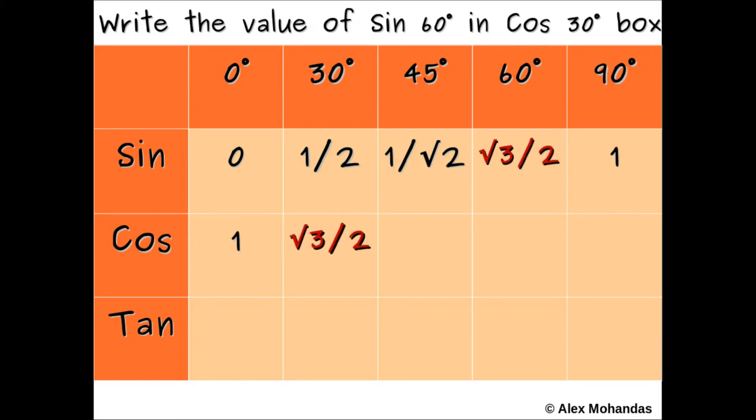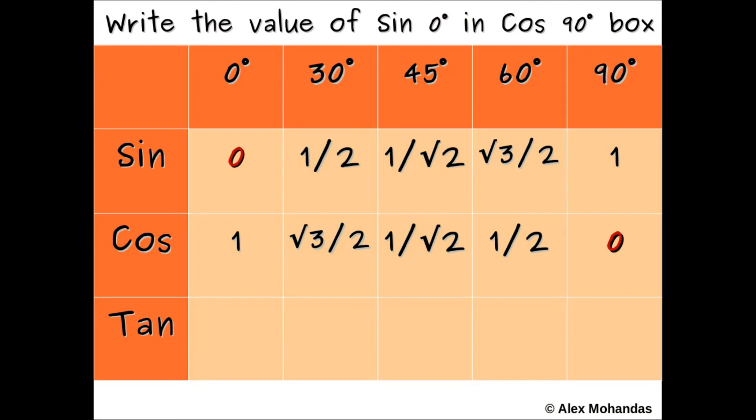Cos 0 equals sine 90, cos 30 equals sine 60, cos 45 equals sine 45, cos 60 equals sine 30, cos 90 equals sine 0.